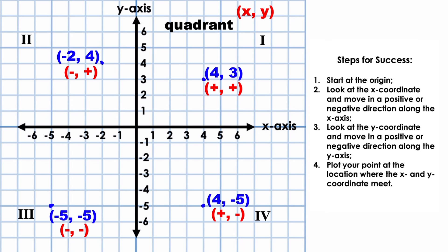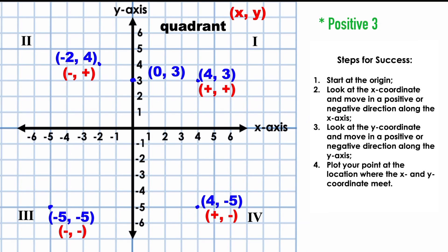Sometimes you will locate points that are not in any one quadrant. This is because the point is located on either the x-axis or the y-axis. For example, one point is not in quadrant I or quadrant II — it is located on the y-axis. We don't move in the positive or negative direction on the x-axis because our first coordinate is 0, but we do move up positive 3 on the y-axis. Another point is not in quadrant II or quadrant III — it's located on the x-axis. Starting at the origin, we move negative 4 along the x-axis, but our y-coordinate is 0, so we don't move up or down. Our point lies right here at negative 4 on the x-axis.